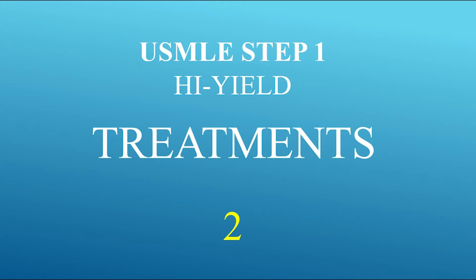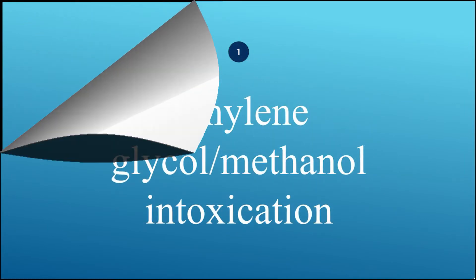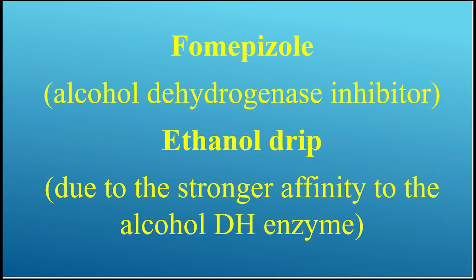Welcome to USMLE Step 1 High Yields Treatment. How do you treat ethylene glycol or methanol intoxication? Use fomepizole, an alcohol dehydrogenase inhibitor. However, due to the condition of the patient, an ethanol drip might be used instead due to its stronger affinity to the alcohol dehydrogenase enzyme.